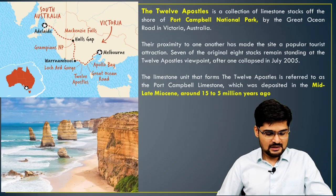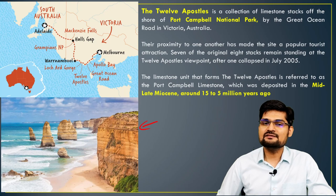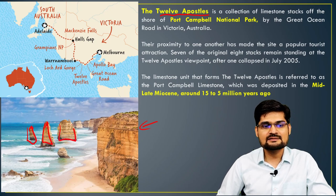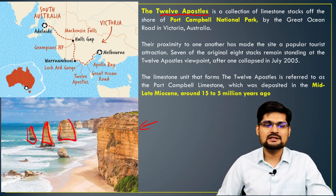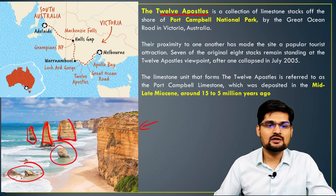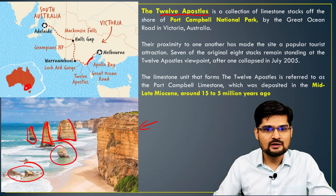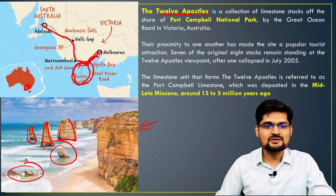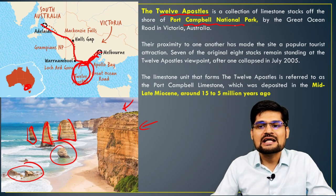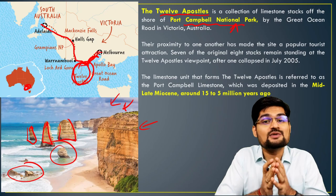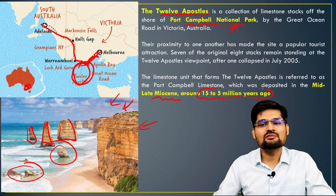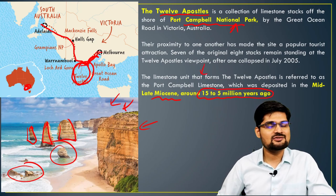Another important coastal feature is the 12 Apostles — standing rock stacks. There were originally 12 in number and they are gradually eroding over time. You'll find them in the southern part near Apollo Bay, along the Great Ocean Road which connects Melbourne to Adelaide. This is located in Port Campbell National Park, an area famous for its unique geodiversity in the world. The time of formation is Late Miocene, around 15 to 5 million years ago.